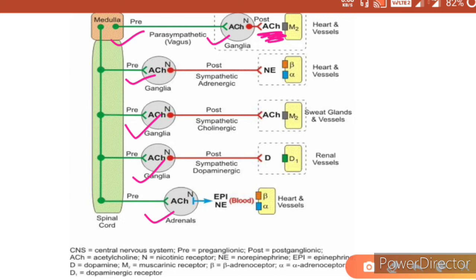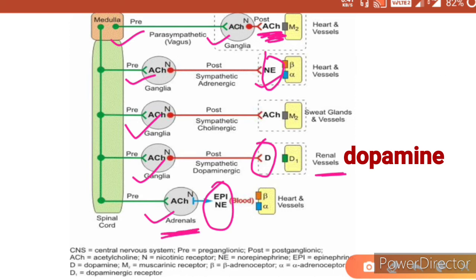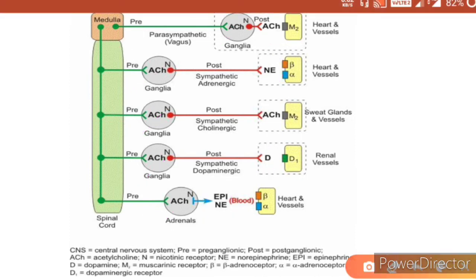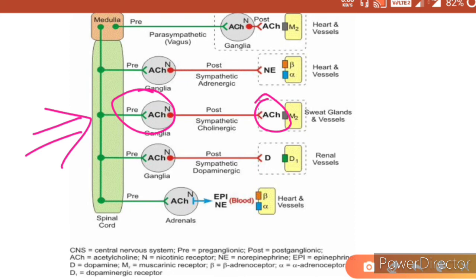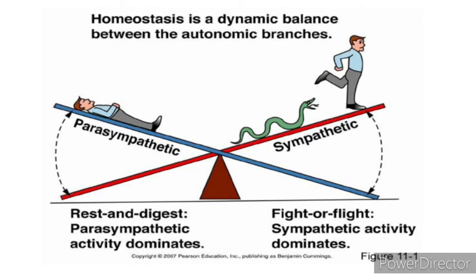That's why the parasympathetic system is referred to as the cholinergic system — because acetylcholine is its neurotransmitter. In the sympathetic system, at most post-ganglionic fibers, the neurotransmitter secreted is noradrenaline. It can be dopamine in the case of renal vessels, or epinephrine and norepinephrine released from the adrenal medulla. There is only one place in the sympathetic nervous system where acetylcholine acts as both the pre- and post-synaptic neurotransmitter — on the sweat glands and vessels.